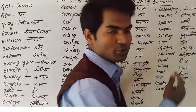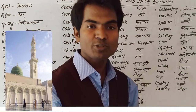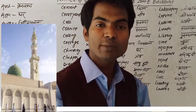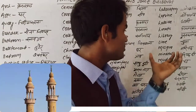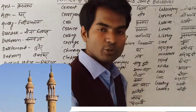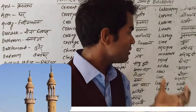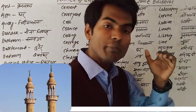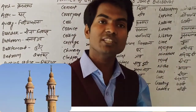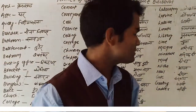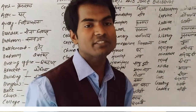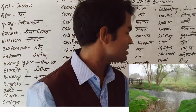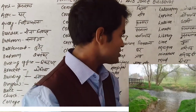Mosque — mosque ka matlab hota 'masjid,' where Muslims go for reading the namaz, that is called mosque. Minaret — minaret ka matlab hota 'masjid ka minar.' Jo masjid ka jo minar hota hai, usko English mein bolte hain minaret. Mud — mud ka matlab kya hota hai: 'keechar' (mud/slush).